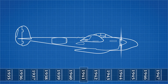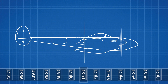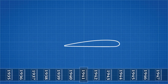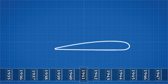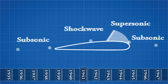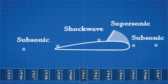As air passes over the wing, the air over the top of the airfoil accelerates — this is how the wing generates lift. This means that a wing traveling at less than the speed of sound can actually develop areas of localized flow traveling faster than the speed of sound, and shock waves form at these locations.